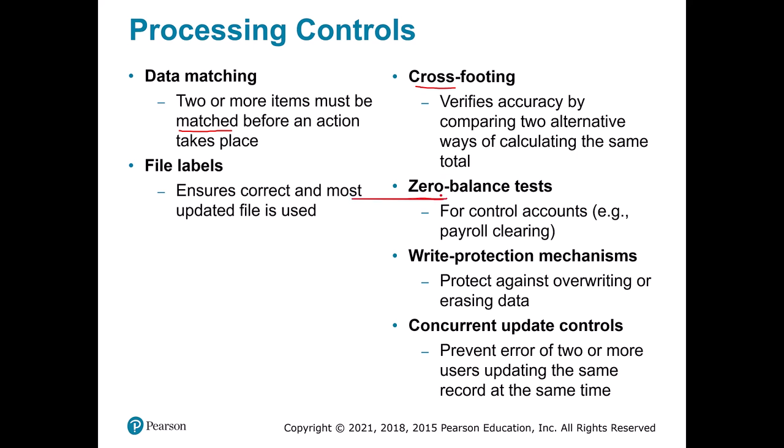A zero balance test is another way to check things. For payroll each month, you might have a special account set up where you only allow money to be transferred in that should be coming out, so that account should clear to zero at the end of each period. Write protection mechanisms ensure you don't accidentally erase or overwrite information — for example, not allowing pencils on checks, only pens. Concurrent update controls make sure people don't wipe each other's data out, such as ensuring people aren't editing the same part of a shared Google Doc at the same time.